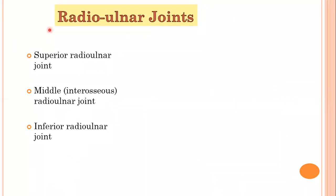So we have three radio-ulnar joints: the superior radio-ulnar joint, the middle radio-ulnar joint, and the inferior radio-ulnar joint. The superior and inferior radio-ulnar joints are synovial joints — they are cavitated joints with capsule, ligaments, and hyaline articular cartilage. The middle radio-ulnar joint is not a synovial joint; it is just the attachment of the two interosseous borders via the interosseous membrane, so we call it a syndesmosis, which is a type of fibrous joint where ligaments join the bones at a distance.